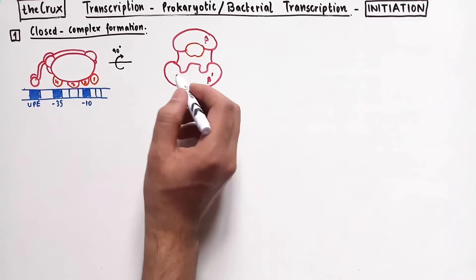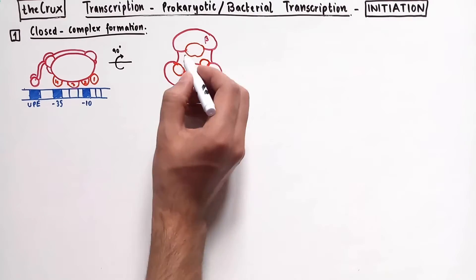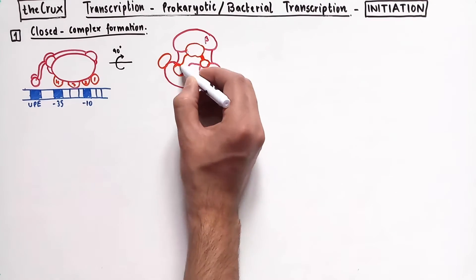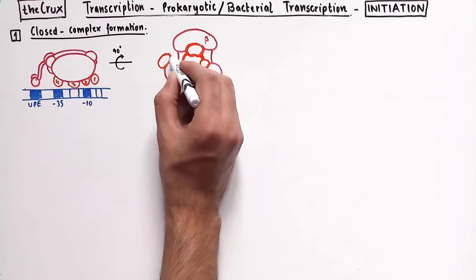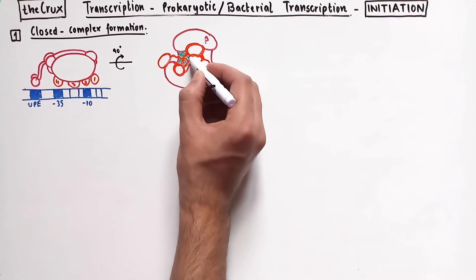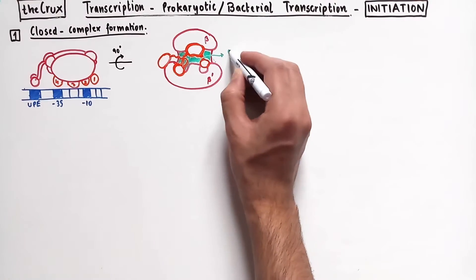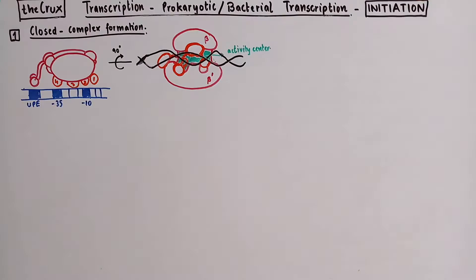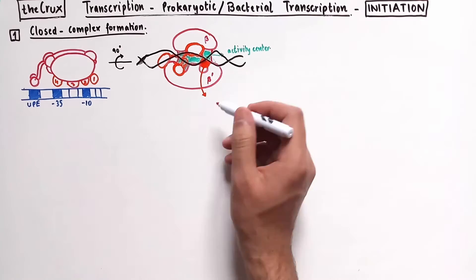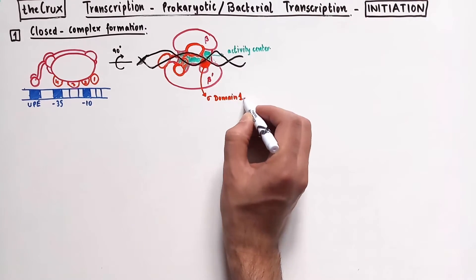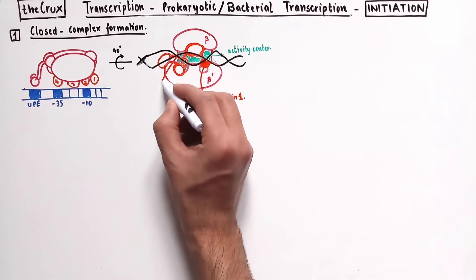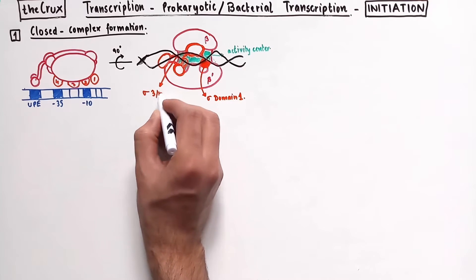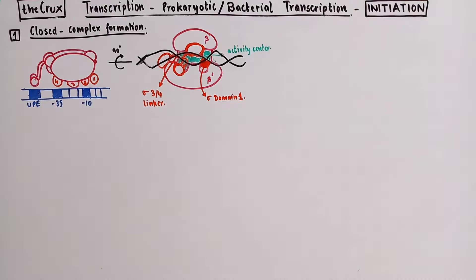The sigma domains here are positioned at specific locations and each domain is joined by the linker proteins. The green space here represents the catalytic activity center of the enzyme. In this complex, the activity center is blocked by the domain 1 of sigma factor and likewise the RNA's exit channel of the enzyme is blocked by the flexible linkers that connect sigma 3 and sigma 4 domains.